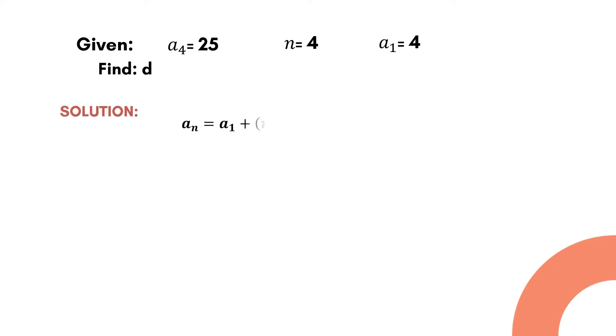First, we copy the formula for finding the nth term of an arithmetic sequence. Then we substitute the new terms of the formula. There we have a sub 4 is equal to a sub 1 plus (4 minus 1) times d.